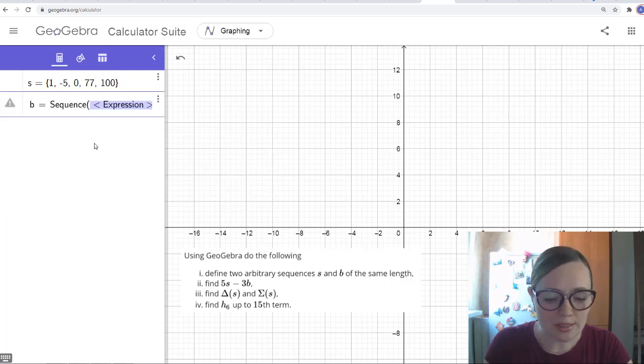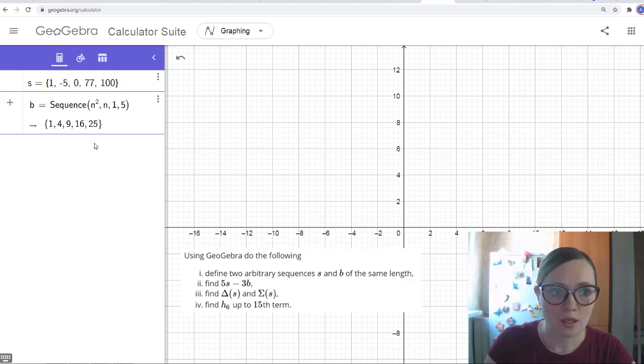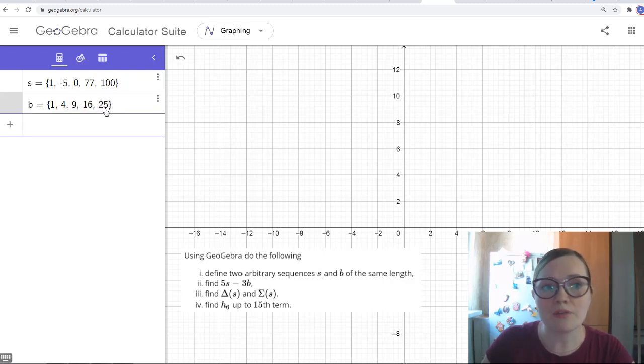Let's choose this one. The expression, let's say we want to get n squared. We want to get 5 numbers which are squares of the first 5 integers, for example. Then we need variable, in our case this is n. The start value, let's say we start from 1 and we end until 5. So you see we get a sequence of the first 5 squares.